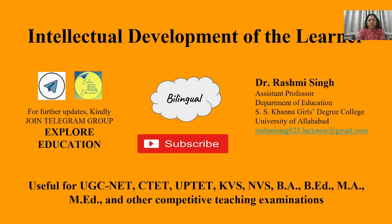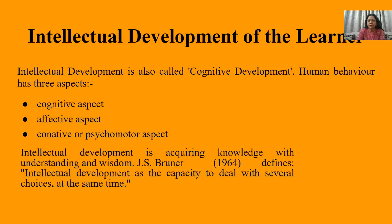Bauddhik, or you can also call it sangyanaatmak. So, all kinds of development I have discussed with you — whether it is moral development, emotional development, language development, and all related things like concept formation, memory, and all. But this is a composite, holistic aspect of intellectual development of the learner. So we will cover this quickly. Intellectual development of the learner is also called cognitive development. We have studied cognitive development headings such as Piaget, Cognitive Development, Brunner, and all kinds of things.